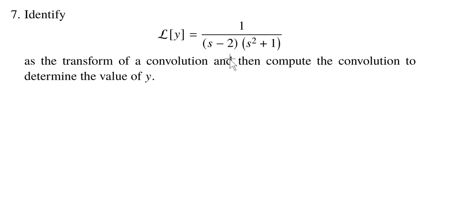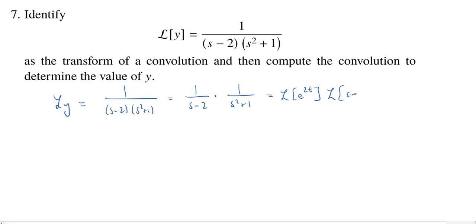So let's see how we do that. Well, if we start with L of y equals 1 over (s - 2) times (s² + 1), I can make the rather silly observation that this is the same as 1 over (s - 2) times 1 over (s² + 1). But as silly as that observation is, it's actually quite useful because I know that this first factor is the Laplace transform of e^(2t) and I know that the second factor is the Laplace transform of sin(t).